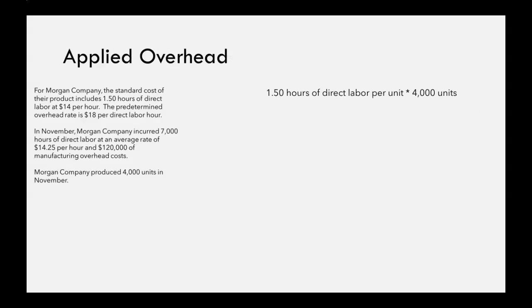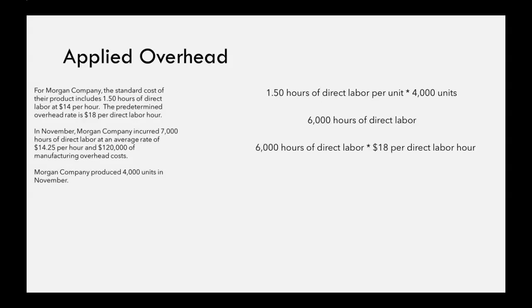To find applied overhead, we take the 1.5 hours of direct labor per unit and multiply it by the number of units actually produced in November — that 4,000 amount. That tells us we would have expected 6,000 hours of direct labor. Then we multiply 6,000 by the predetermined overhead rate of $18, giving us applied overhead of $108,000.